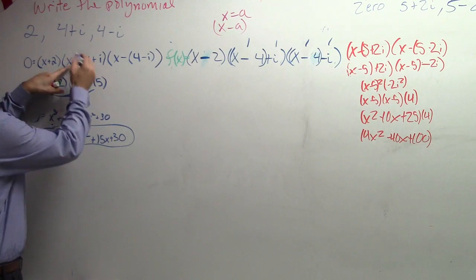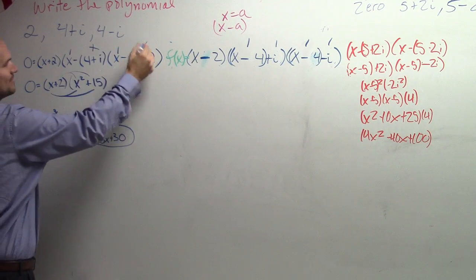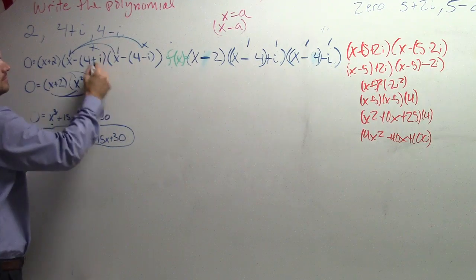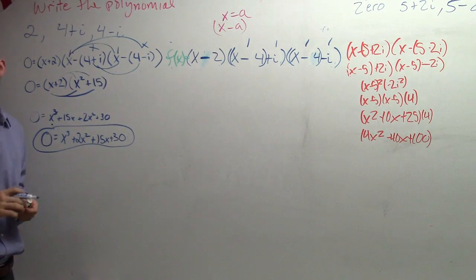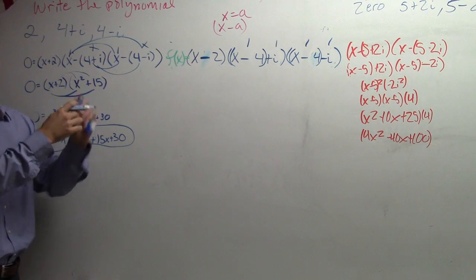Over here, these are the same, these are the same, these are not the same. Right? So to multiply these, you'd have to do FOIL. Multiply every term times every term. You would still get the same answer, but you've got to make sure you multiply everything by everything. Okay?